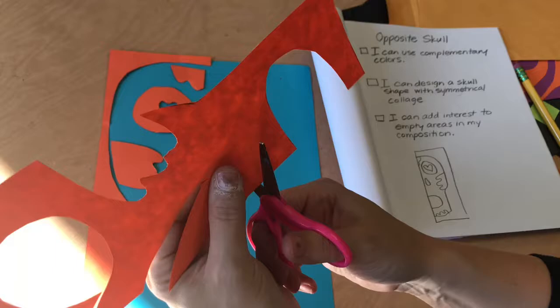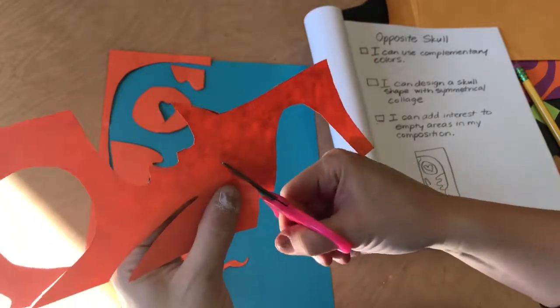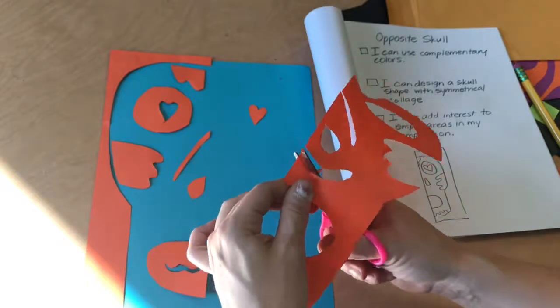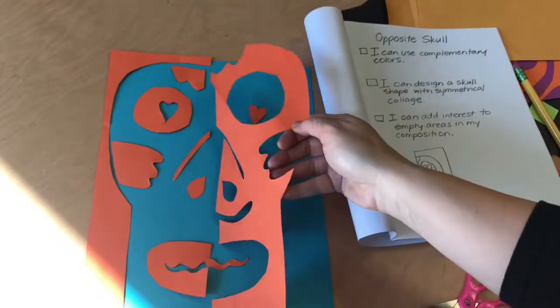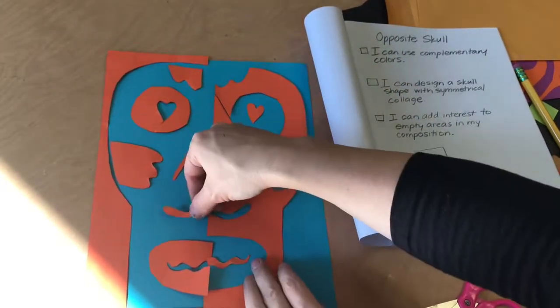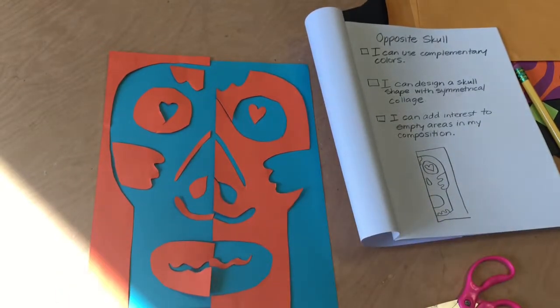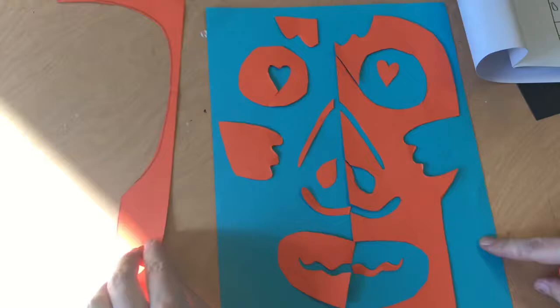If you have a really big empty space between the nose and the mouth, you might want to think about some kind of mustache or a special line or shape between the nostrils and the opening of the mouth. And so once you're done with all your cutting, it's time to glue stick.